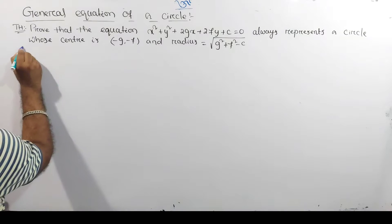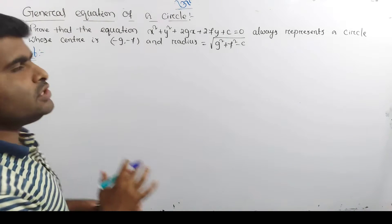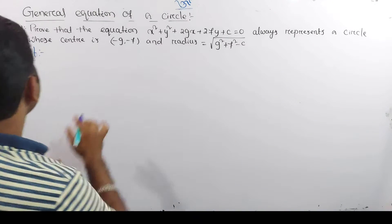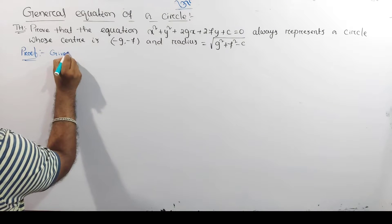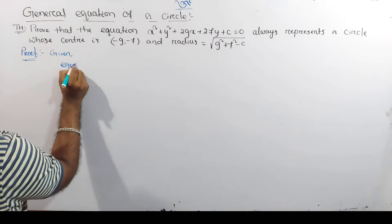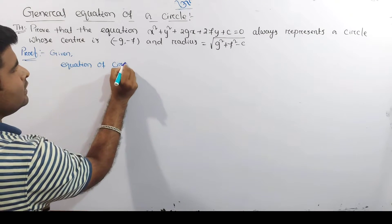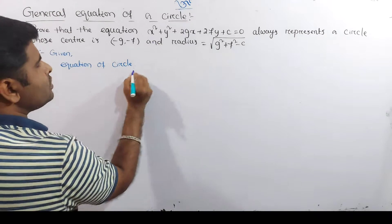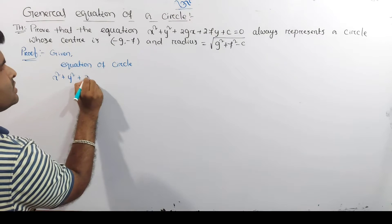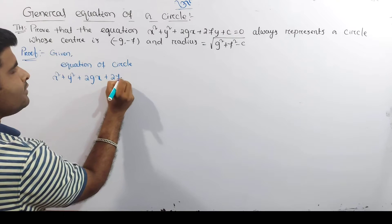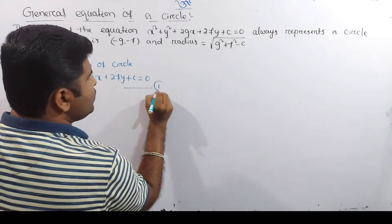Let's look at the proof. We need to look at the equation of a circle. Given equation of a circle: x squared plus y squared plus 2gx plus 2fy plus c equal to 0. Let it be equation number 1.